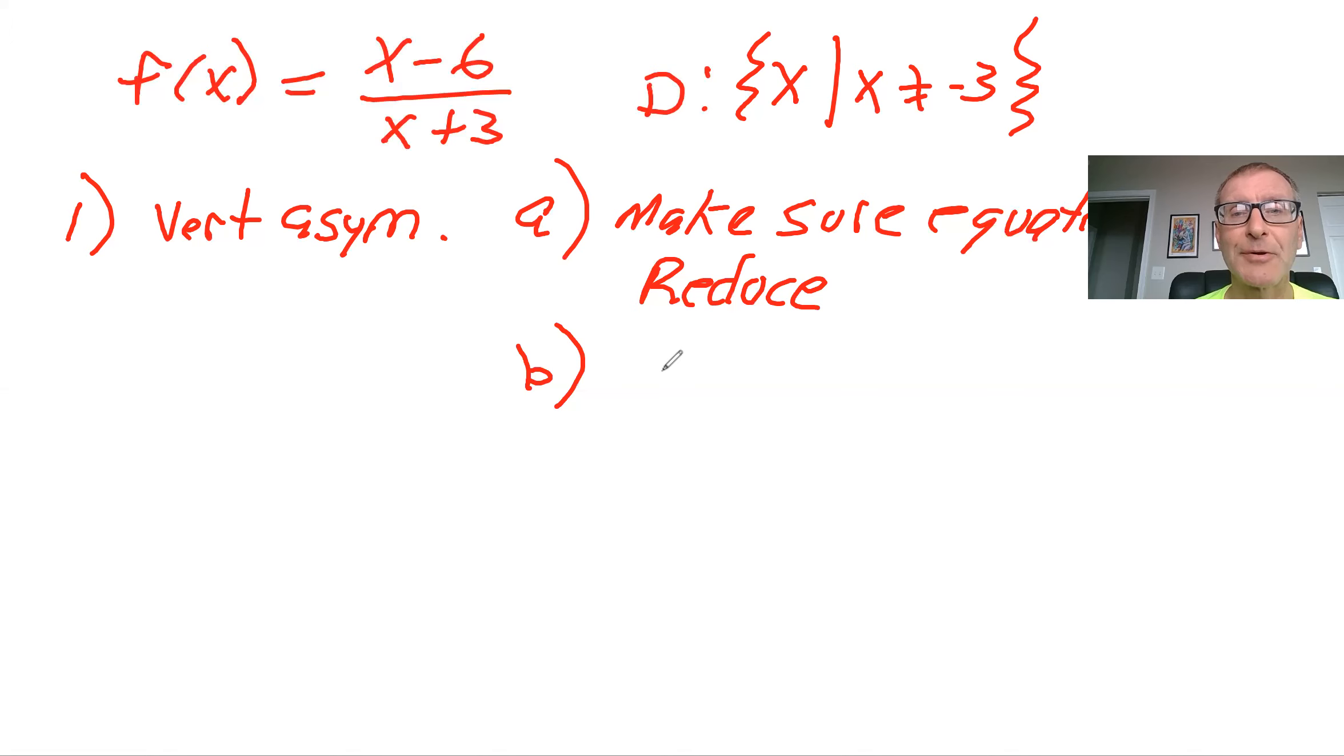And then after you do that, the vertical asymptote is again when the denominator equals 0. And so when you do this, it would be X plus 3 equals 0. Solve for X, you get X equals minus 3.